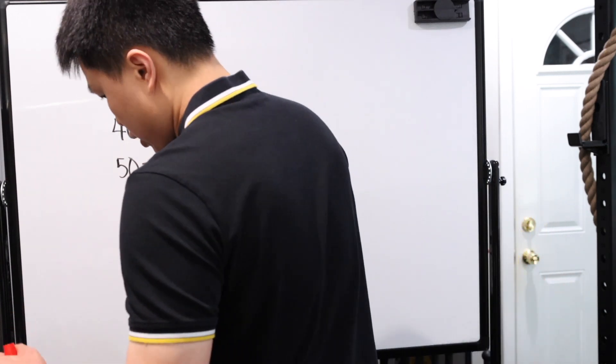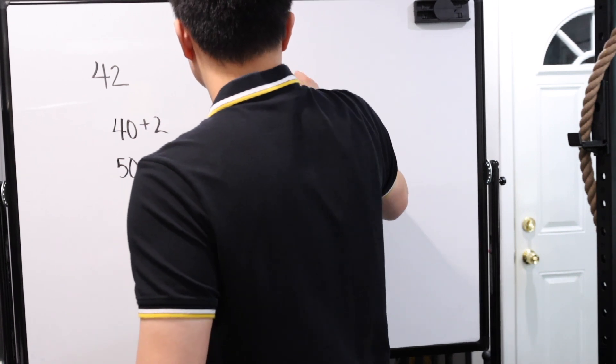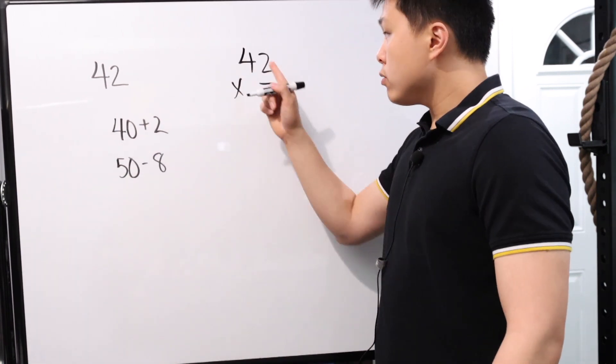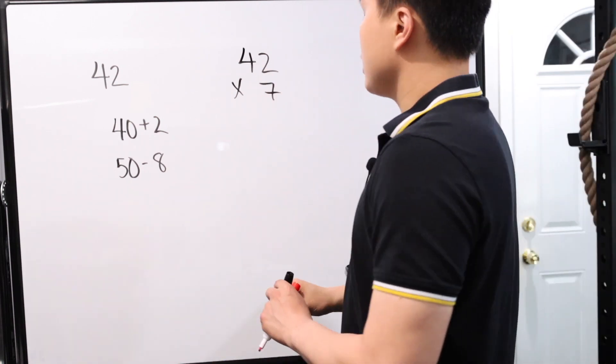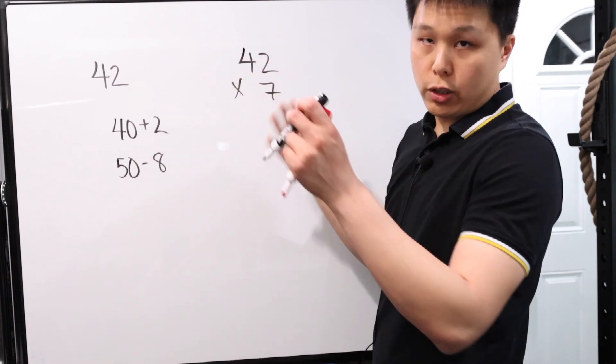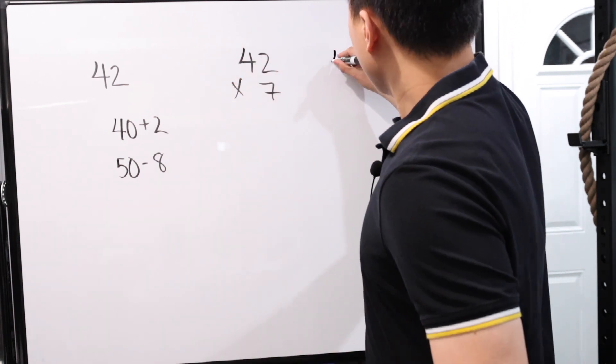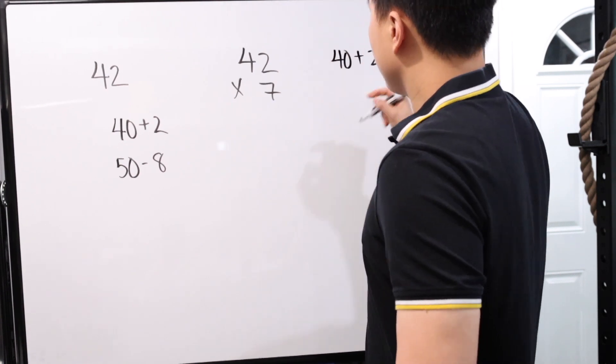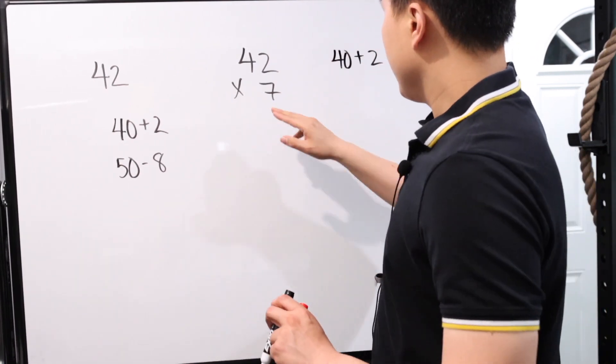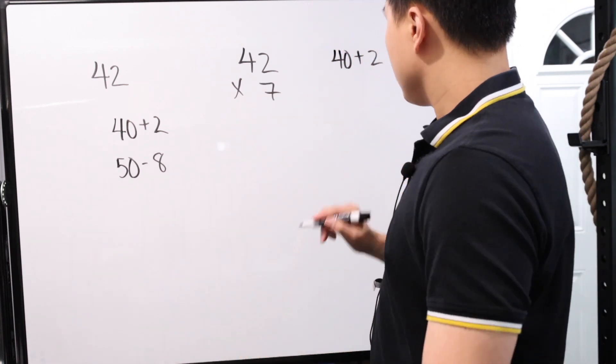Now today we're focusing on multiplication. Now there are two things that you have to focus on when you're trying to multiply very quickly. The idea is that numbers can always be broken down into 10 plus or 10 minus. Now that makes it very simple. So for example, 42 can be broken down into two things, either 40 plus 2 or 50 minus 8. Both of these are the same as saying 42.